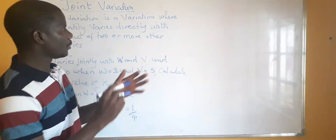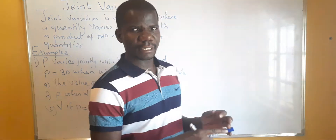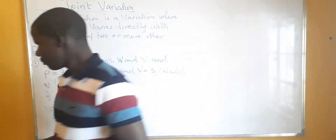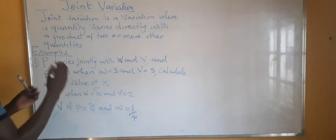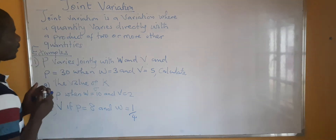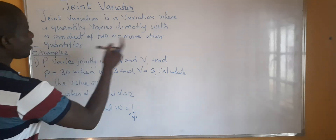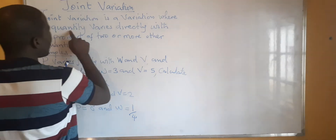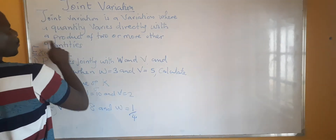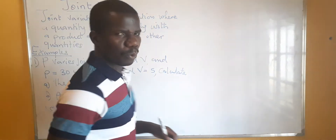I previously looked at inverse variation, direct variation, and another lesson where I presented a combination of the two. Now we are looking at joint variation. Joint variation is a variation where a quantity varies directly with a product of two or more other quantities.